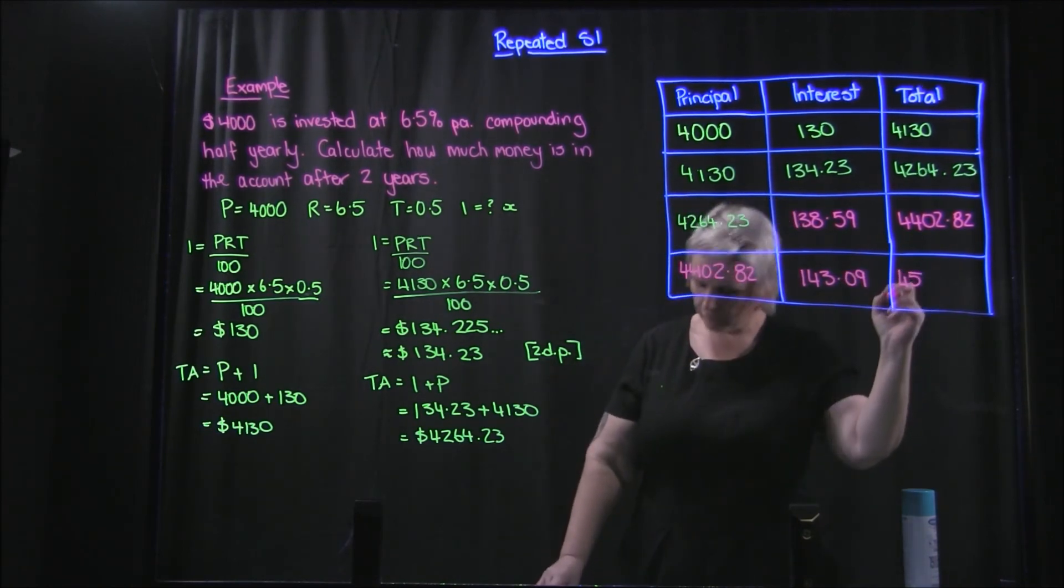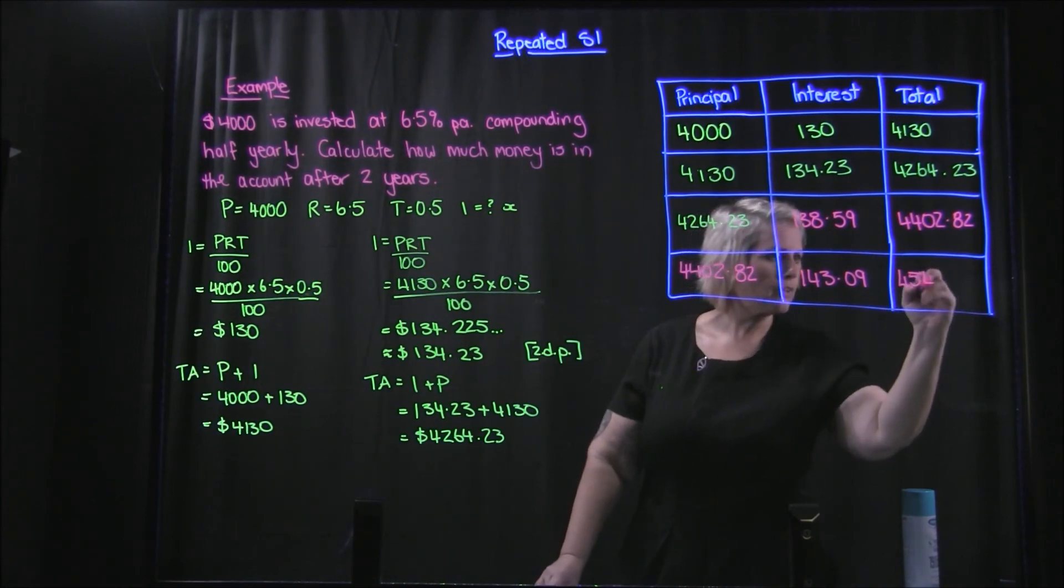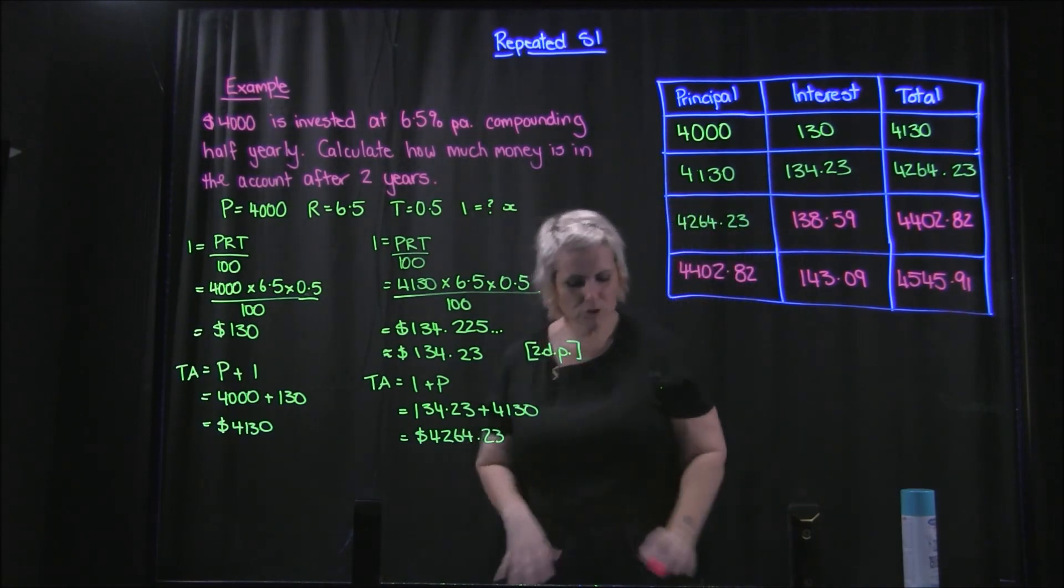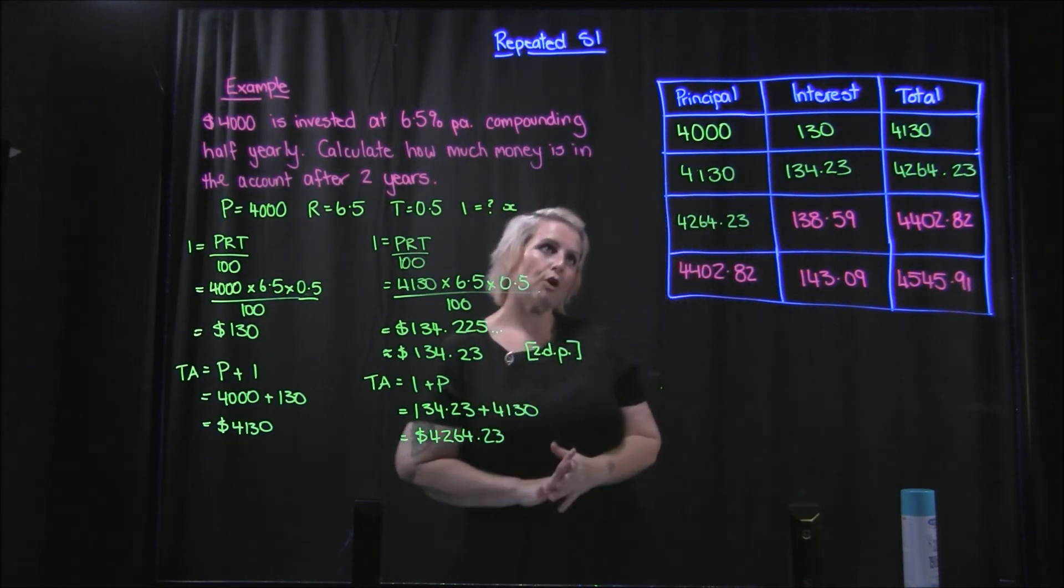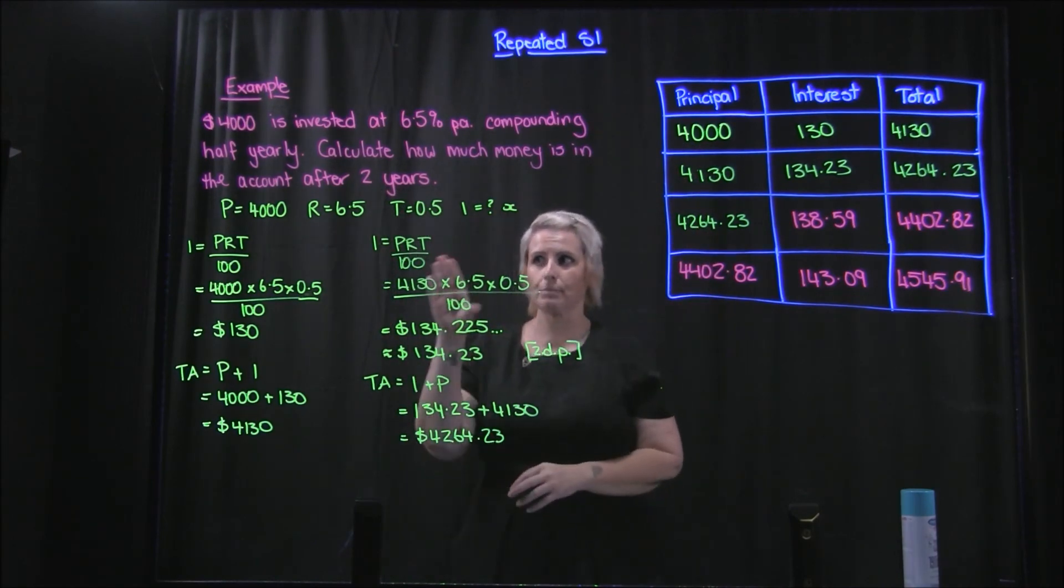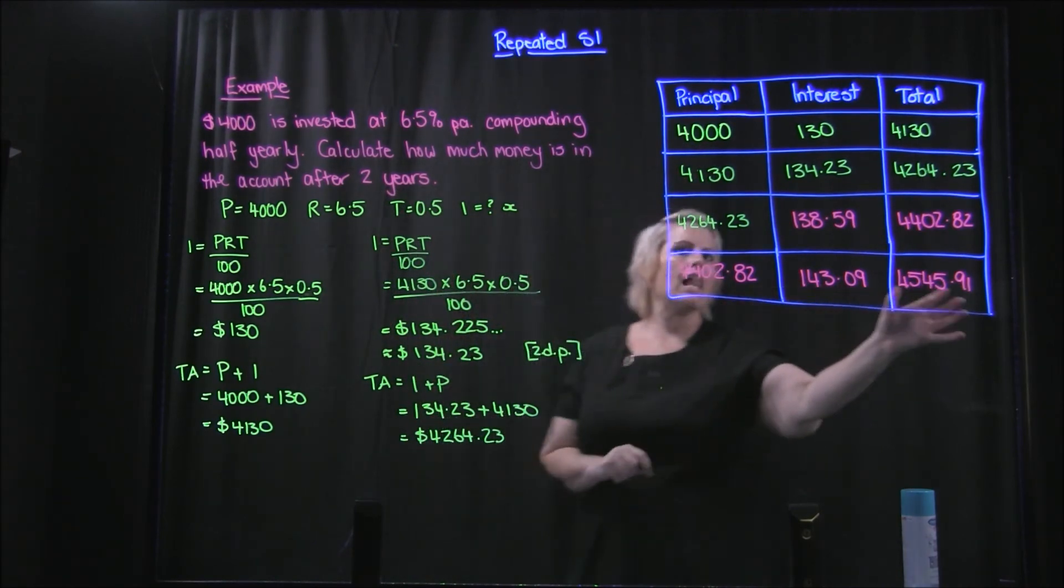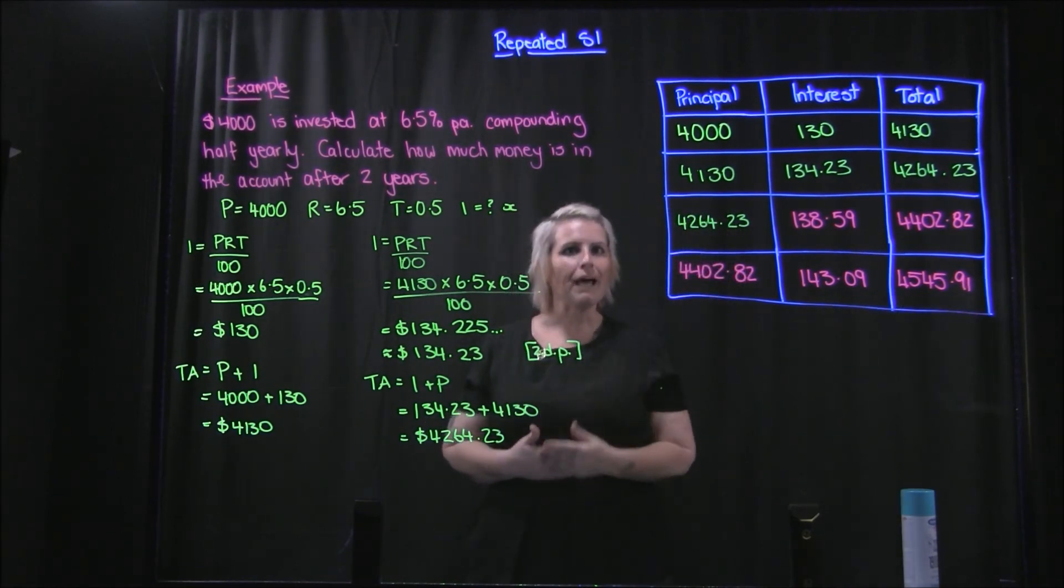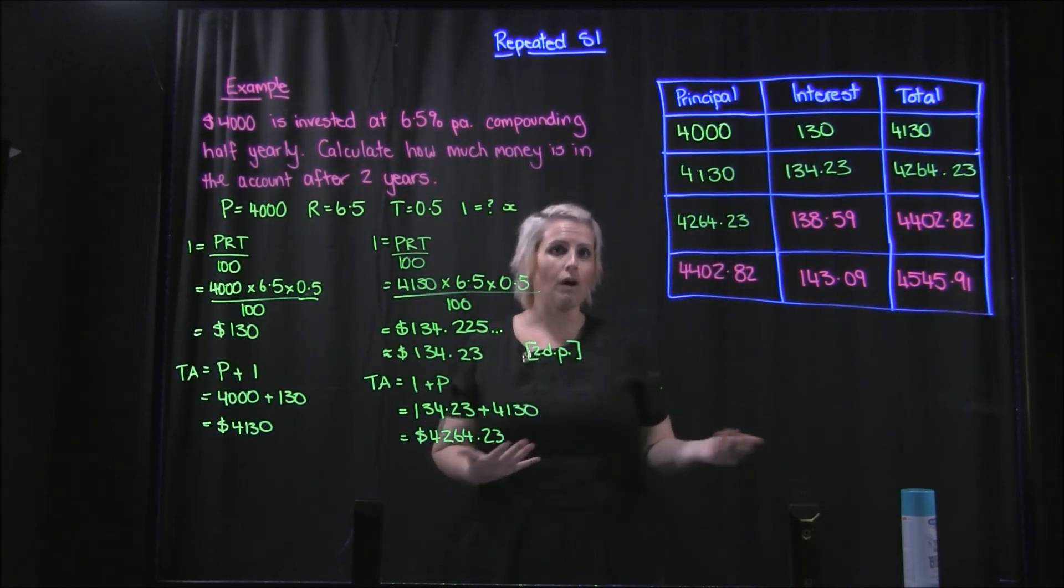Okay, so if you were to work out the interest just on $4000 for two years at 6.5%, you would have less money at the end. So compound interest actually nets you more, or if you're borrowing money, costs you more. So keep that in mind when you're looking at loans.